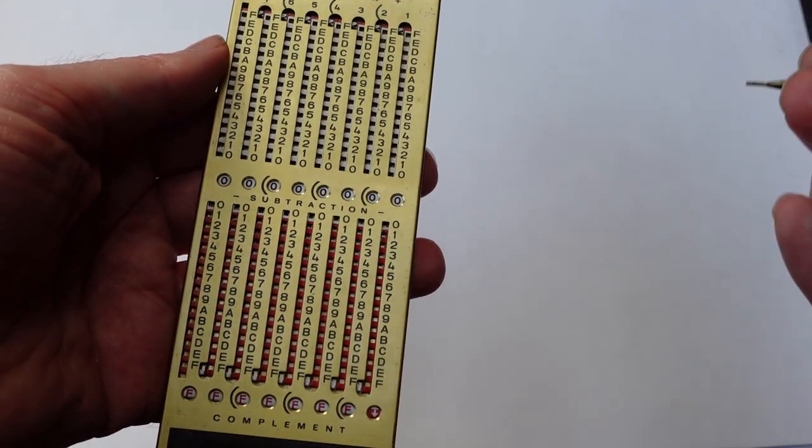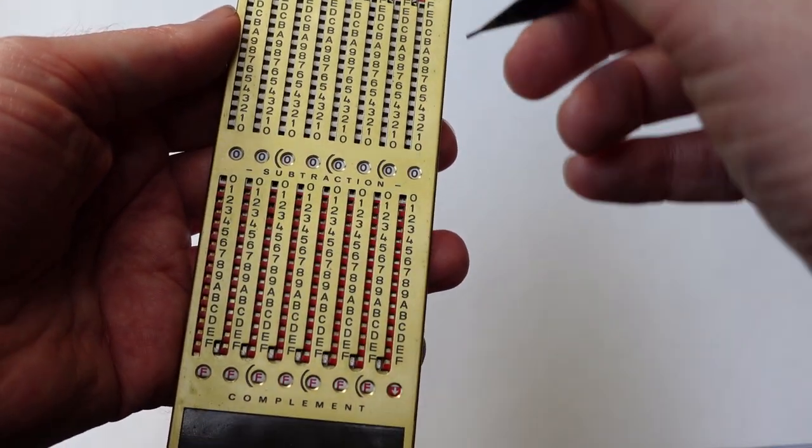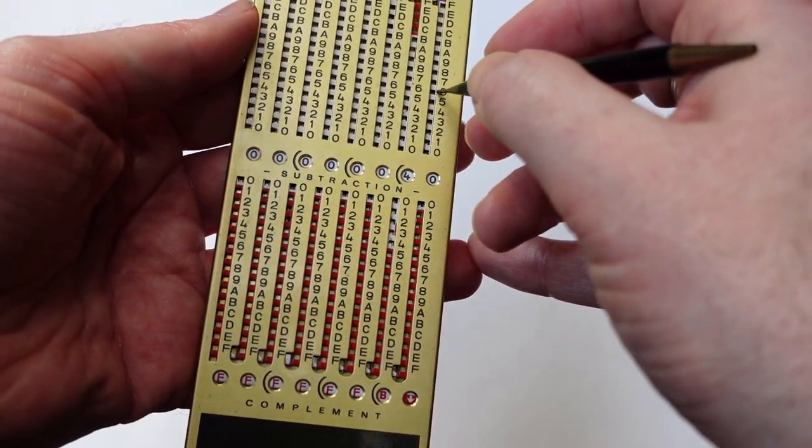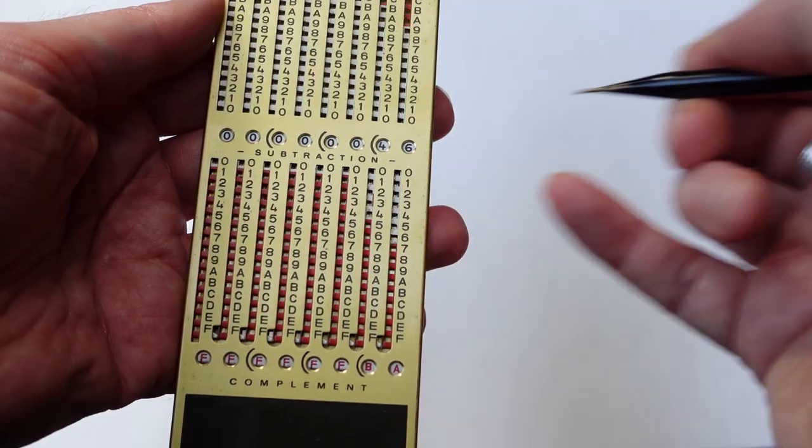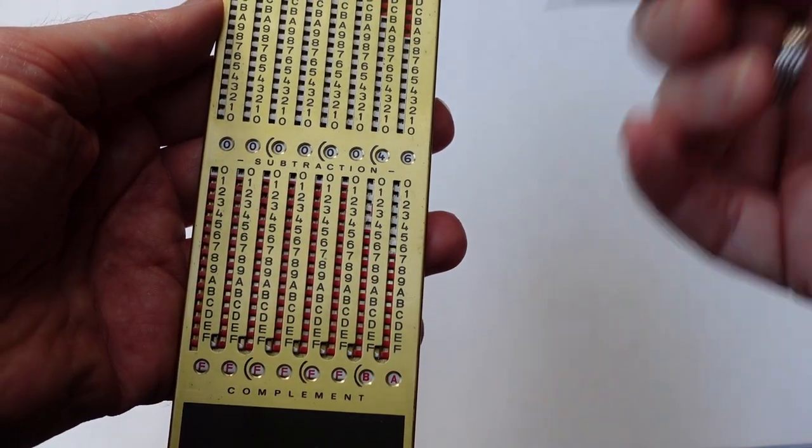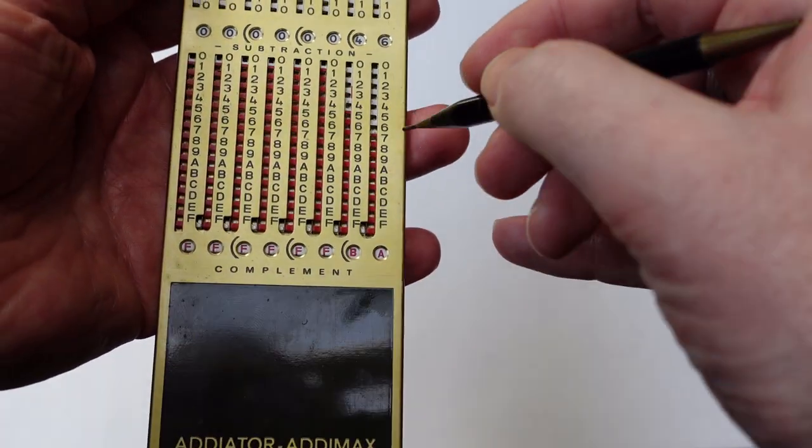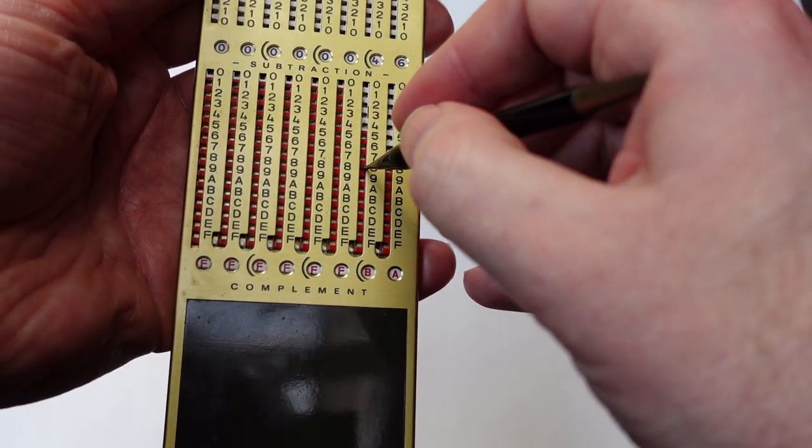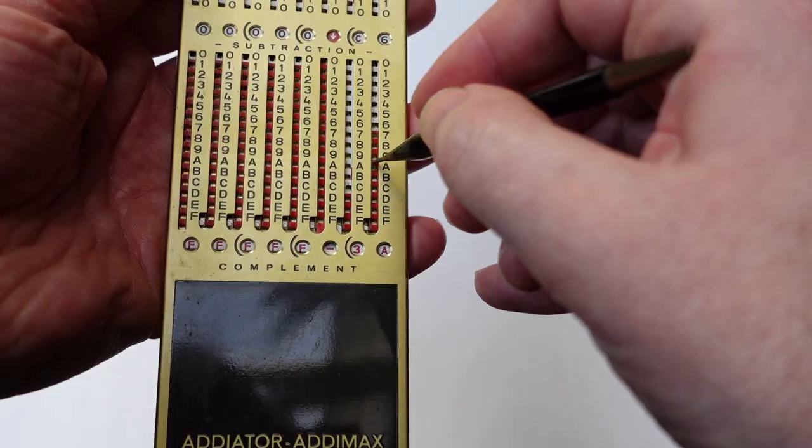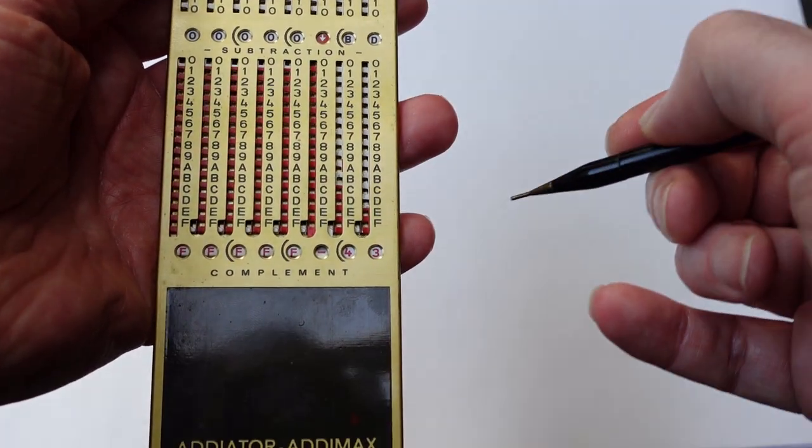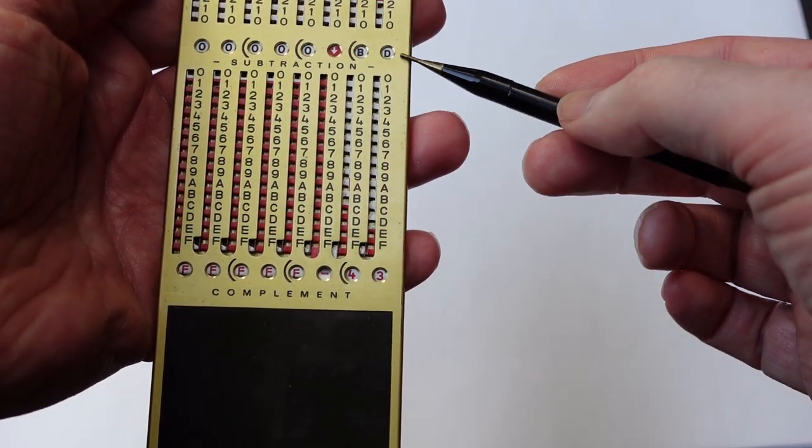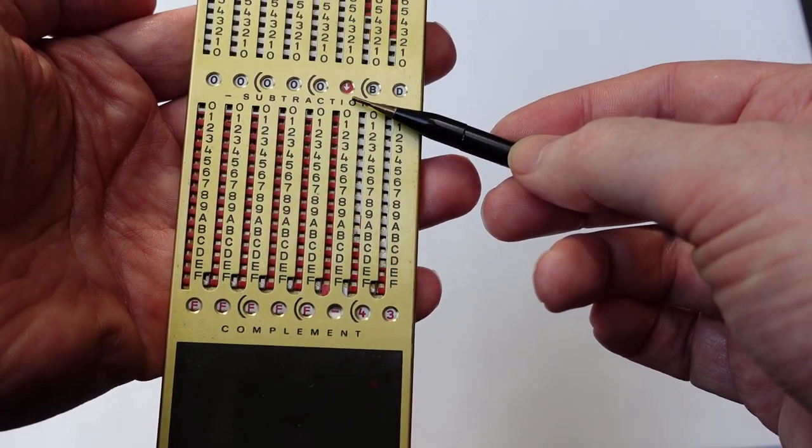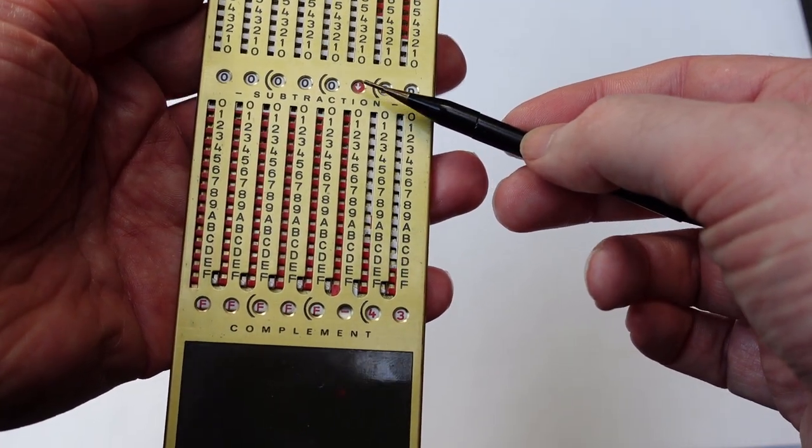Suppose you do a subtraction that puts the result below 0. For example, I do 46, and I subtract 89. So I subtract 8 and subtract 9. The result is this, and you have this little arrow that shows that it's underflowed under 0.